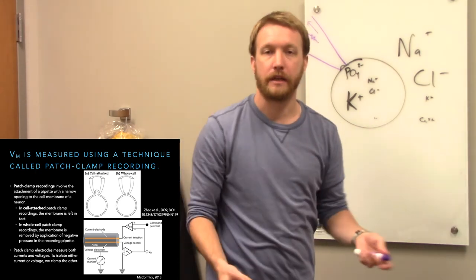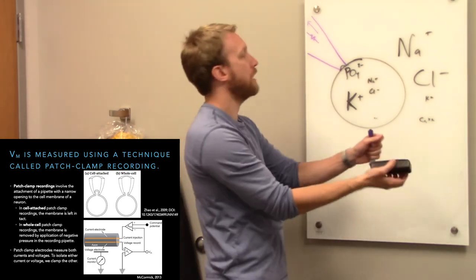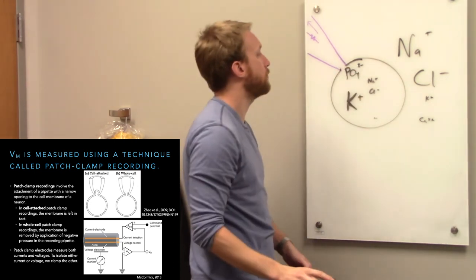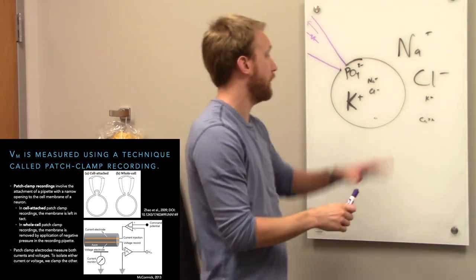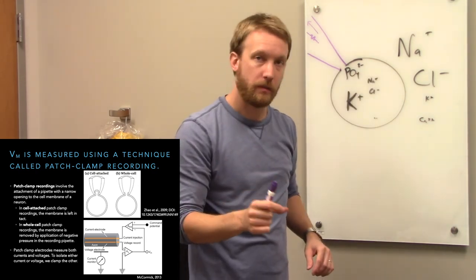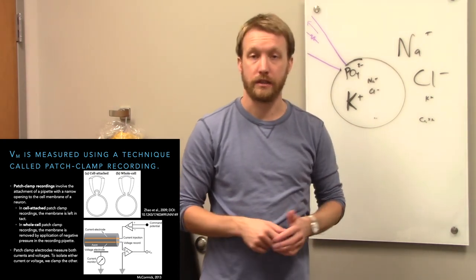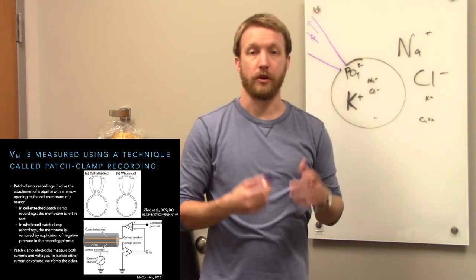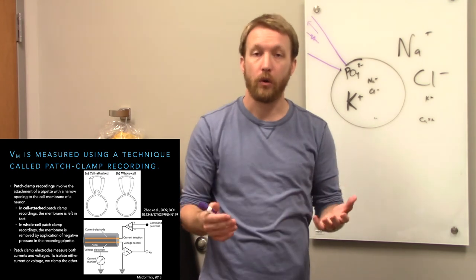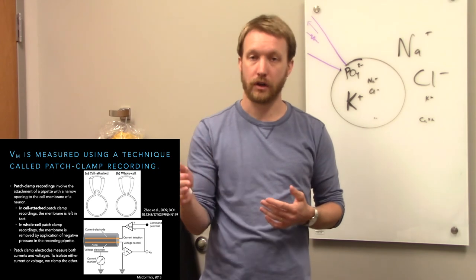In cell-attached mode, you can measure electrical activity but don't have great access — you can measure something big like an action potential, but you can't look at membrane potential or synaptic potentials. To do that, you apply a little more vacuum until you rupture the cell membrane — not so hard that you suck out all the contents, just until you see it open up. At that point, you can control the electrical activity of the cell.